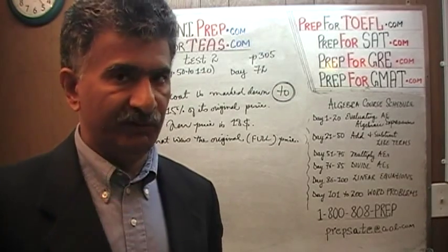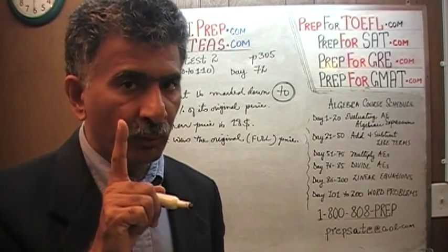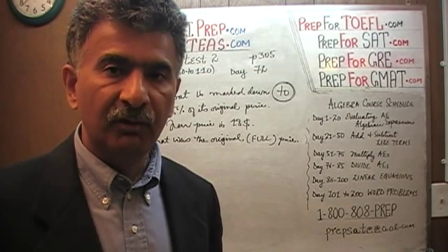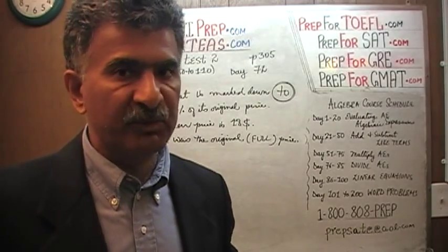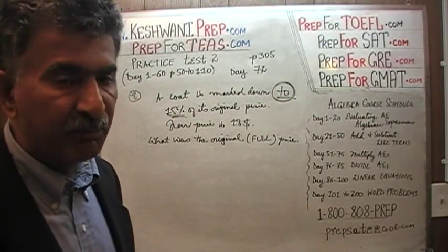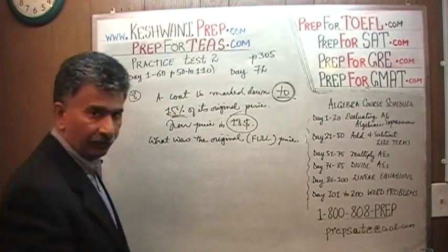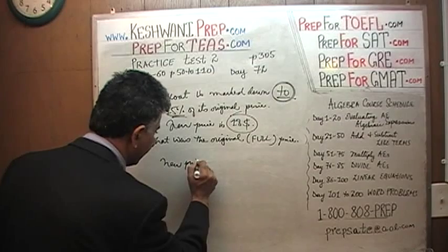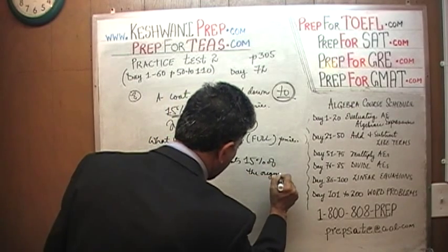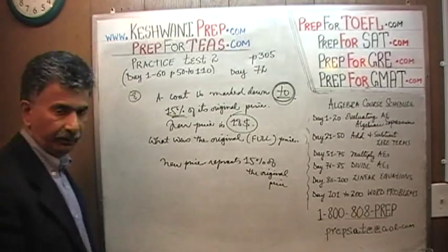What does it mean if something is marked down to 15 percent? If the original price of the coat was $100, the fact that it's been marked down to 15 percent of its original price means the same coat is now selling for only $15. They're giving an 85 percent discount. A markdown to 15 percent represents a discount of 85 percent. As a result, the new price we are told is $18 — which means $18 represents 15 percent of the original price.